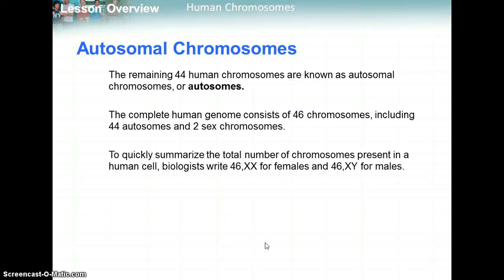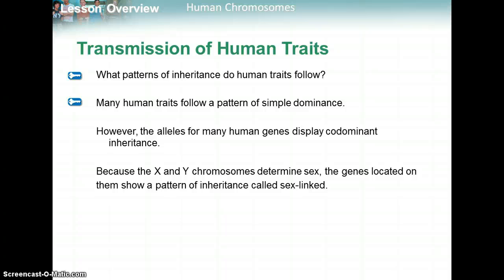To summarize: females have 46 chromosomes, XX; males have 46 chromosomes, XY. Many human traits follow a pattern of simple dominance. Some have a codominant inheritance. And because X and Y chromosomes determine sex, genes located on them show a pattern of inheritance called sex-linkage.